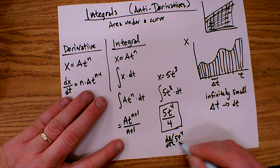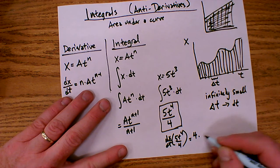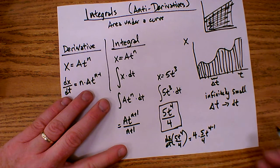Bring the exponent down in front, 4 times 5 fourths t to the 4 minus 1.